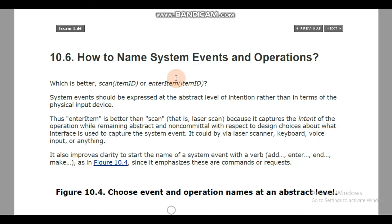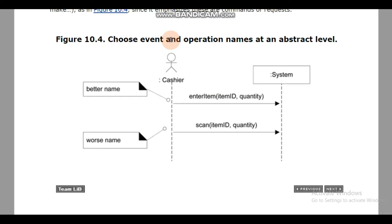Let's see it through a figure for clarity. In this figure, choose event and operation names at an abstract level. Here we have a cashier and system interacting. Enter item ID and quantity - the work is the same but the naming difference is here. It says that enter item is a better name compared to scan, which is a worse name because scan shows something physically done like a physical input device. This is a message that is happening, an event that is occurring - you are entering, so this is far better than scan.